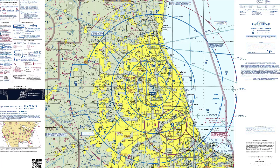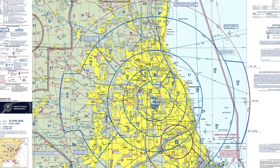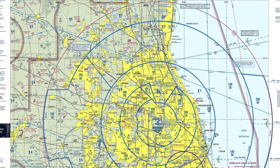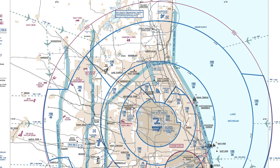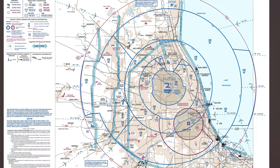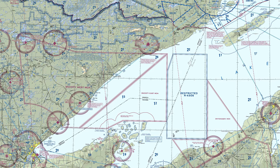Let's briefly look at a VFR terminal area chart for Chicago. It's essentially a blown-up version of the class Bravo airspace so you can see things more clearly. It also includes arrival and departure routes for jet aircraft. There's also a planning chart that's even more decluttered and can help you navigate around the class Bravo airspace.